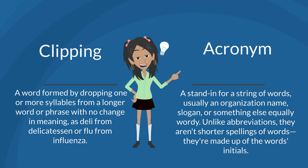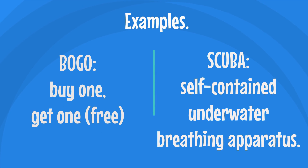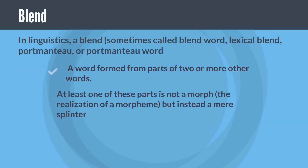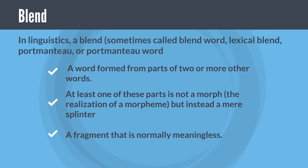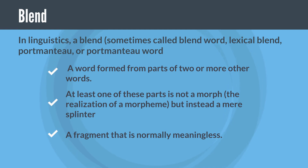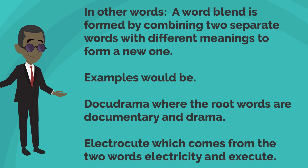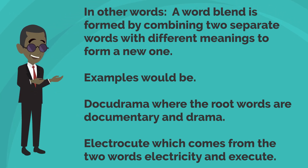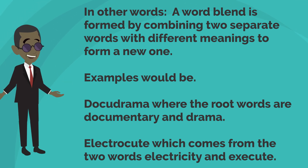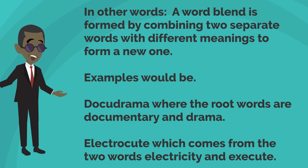An acronym is a stand-in for a string of words — usually an organization name, slogan, or something else equally wordy. Unlike abbreviations, they aren't shorter spellings of words; they're made up of the words' initials. Examples include BOGO (buy one get one free) and SCUBA (self-contained underwater breathing apparatus). A blend — also called a portmanteau — is a word formed from parts of two or more other words. Examples include 'docudrama' (documentary + drama) and 'electrocute' (electricity + execute).